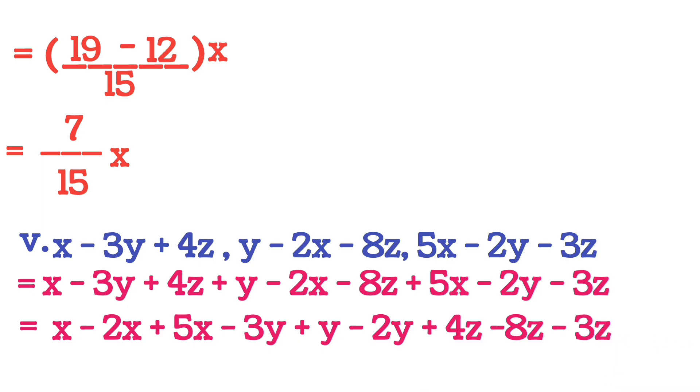5X and X both are positive, so you add: 5X plus X equals 6X and minus 2X, as it is. Now you write first plus Y. Then you see minus 3Y and minus 2Y. Both are negative, so we will do plus. So what we get? Minus 5Y.